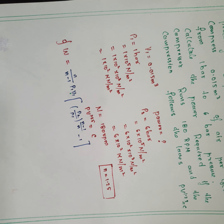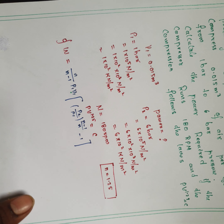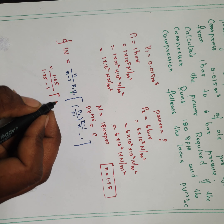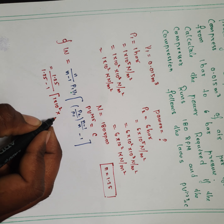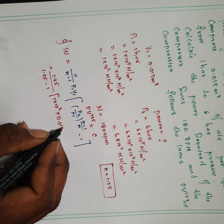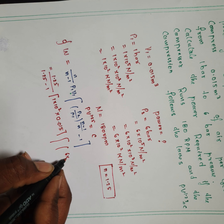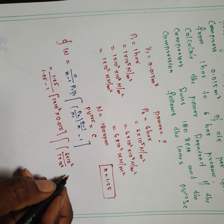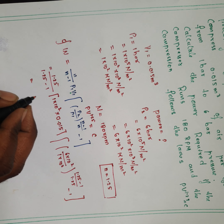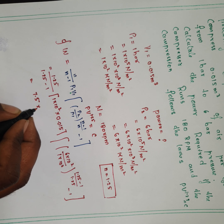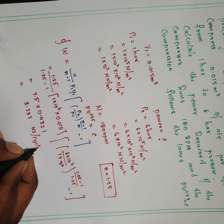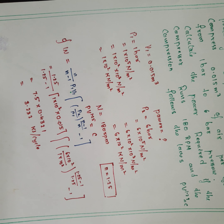Substituting the values: n = 1.25, so n/(n−1) = 1.25/0.25 = 5; P1 = 1 × 10² kN/m², V1 = 0.015 m³, P2 = 6 × 10² kN/m². Solving with a calculator gives work done W = 3.232 kJ per cycle.